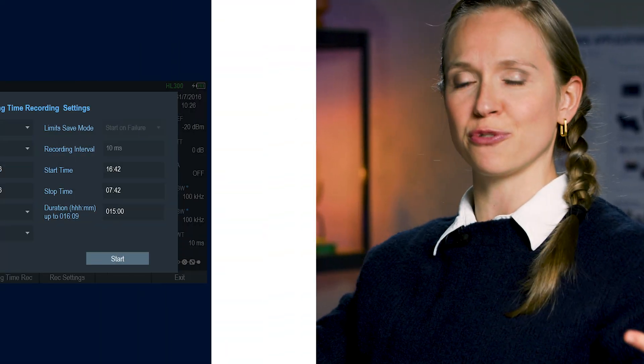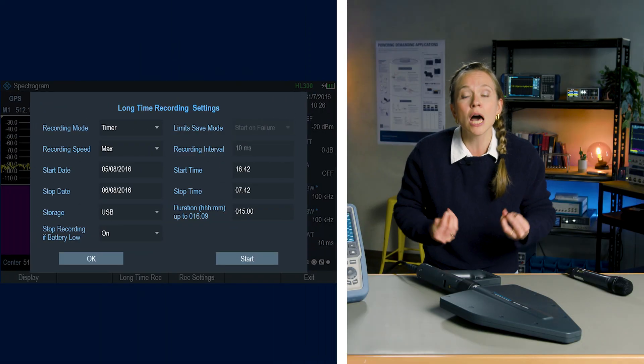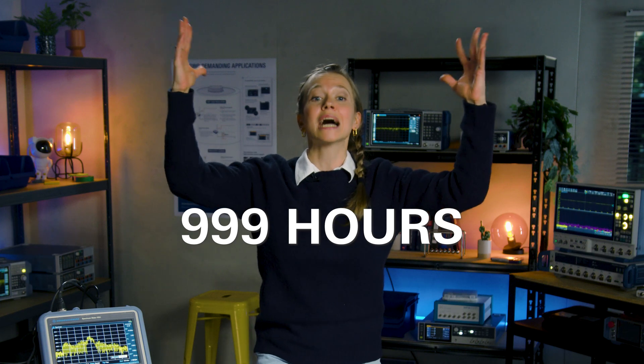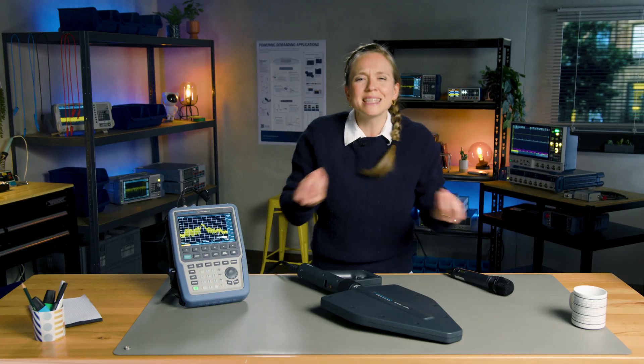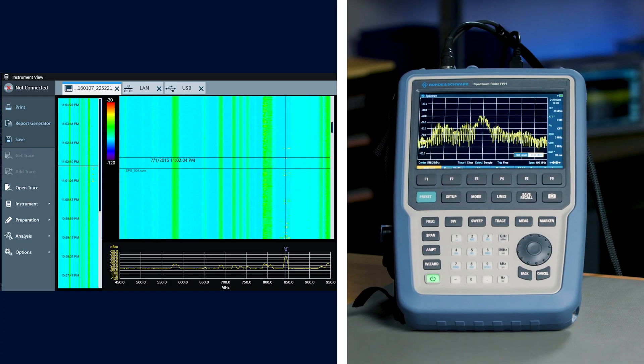To capture intermittent interference, the FPH has a standout feature, Spectrogram Recording, which allows you to capture and analyze up to 999 hours of signal data. You can then use Instrument View software for detailed analysis and documentation.